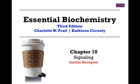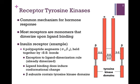In our next lesson on signaling from chapter 10, we want to look at the insulin receptor. The insulin receptor is a type of receptor tyrosine kinase. In a previous lesson, we considered G-protein coupled receptors. This is our second major type of signaling receptor. The name tells us that this receptor has enzymatic activity, which is distinct from G-protein coupled receptors. The name tells us that it is a kinase — it transfers a phosphoryl group to a tyrosine side chain.